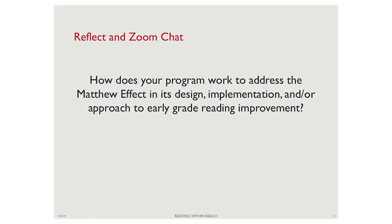Rosemary makes an excellent point about the graph—students may begin at the same point and then things start to diverge. Even though students may all come to school with what we assume are basic foundational language, nutrition, health, and home support, we almost immediately find out there are other factors that influence outcomes as well, which is why we really have to look at the needs of the whole child.